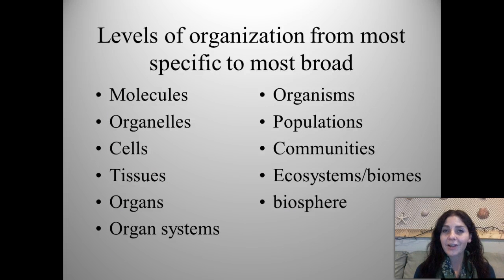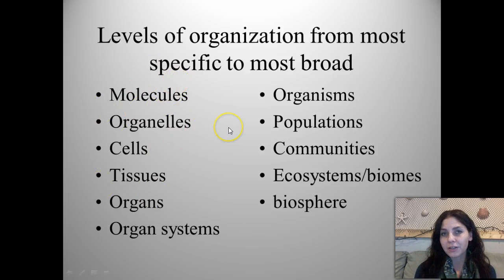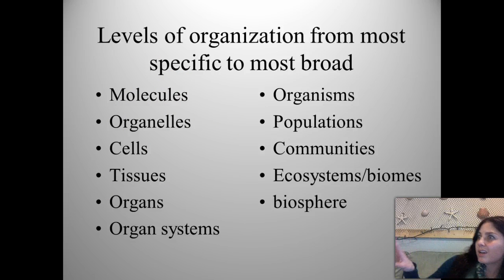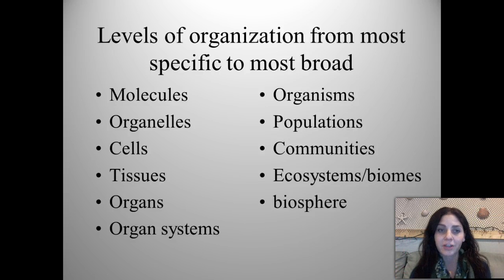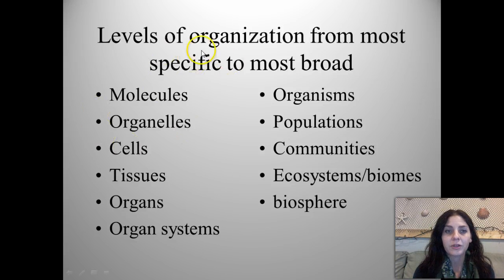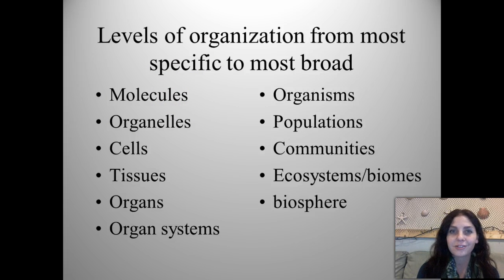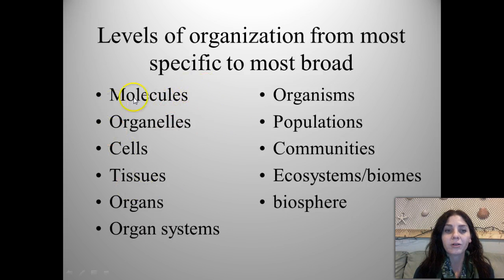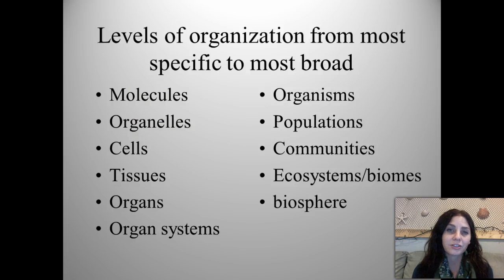As a reminder of all the levels of organization we've learned this year, going from the most specific to the most broad: we have molecules such as carbohydrates, lipids, proteins, and nucleic acids that come together to form organelles. Organelles are those tiny organ-like structures in the cell, such as mitochondria, chloroplasts, endoplasmic reticulum, and the nucleus.